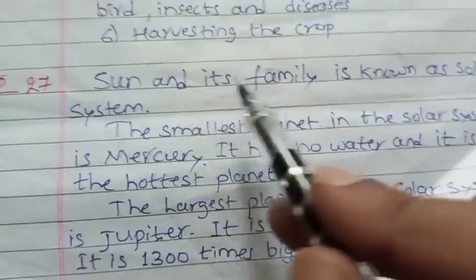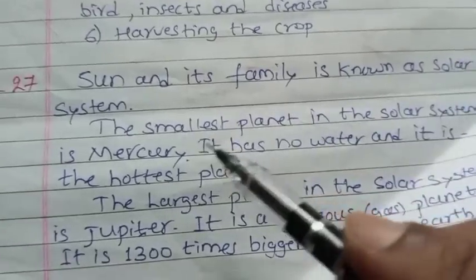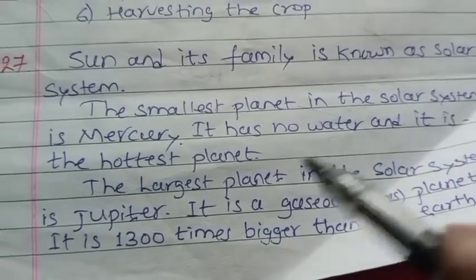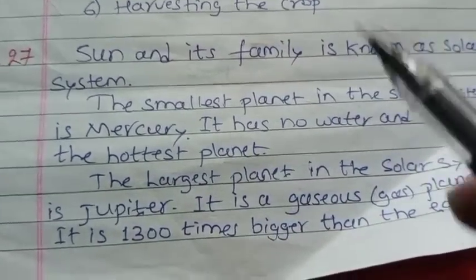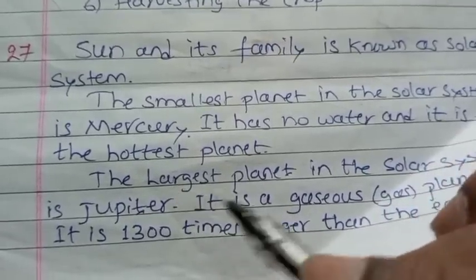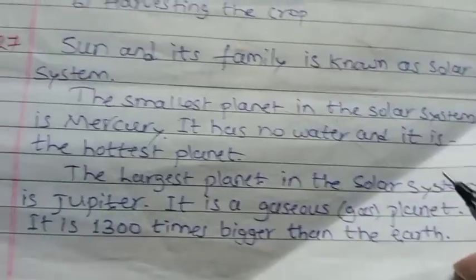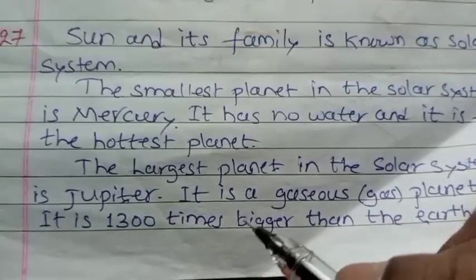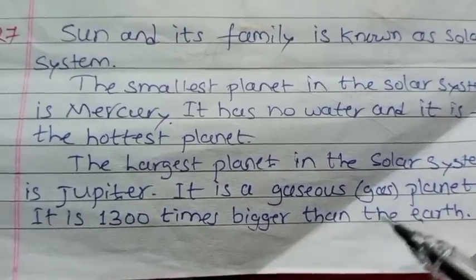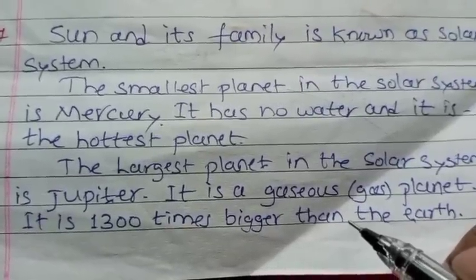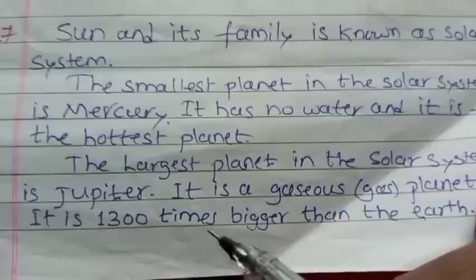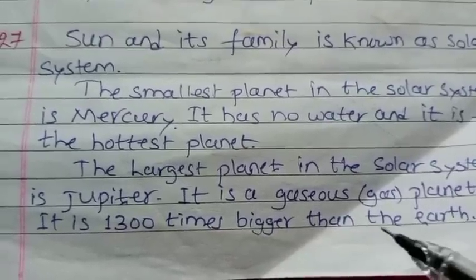Also in the 27th question: What is the solar system? Name the smallest and largest planet. The Sun and its family is known as the solar system. The smallest planet is Mercury — it has no water and it is the hottest planet. The largest planet is Jupiter; it is a gaseous planet and is 1,300 times bigger than the Earth.